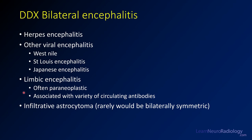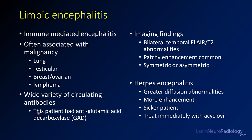Limbic encephalitis is often a paraneoplastic syndrome. It's often associated with a variety of circulating antibodies that you can detect in serum. You can have an infiltrative astrocytoma that looks like this, but it would be very unusual for it to be so bilaterally symmetric. This is a case of limbic encephalitis — an immune-mediated encephalitis often associated with malignancy, namely lung, testicular, breast, and ovarian cancer, and lymphoma. This particular patient had an anti-GAD antibody, which is one of the common antibodies, although there's a long list to think about.